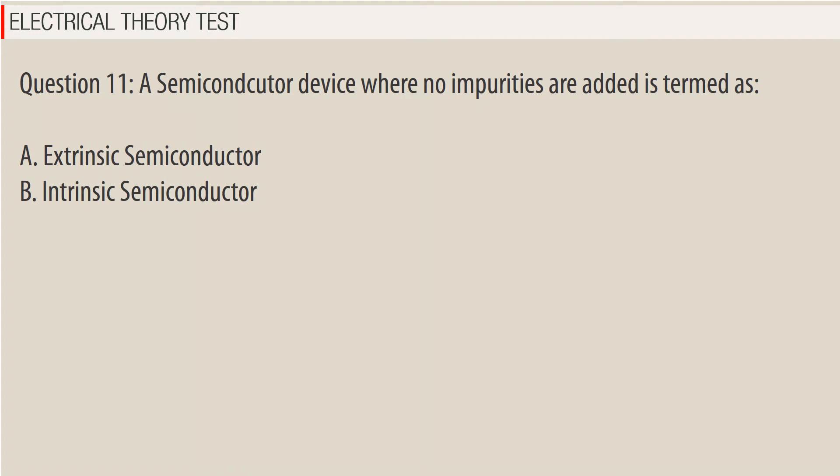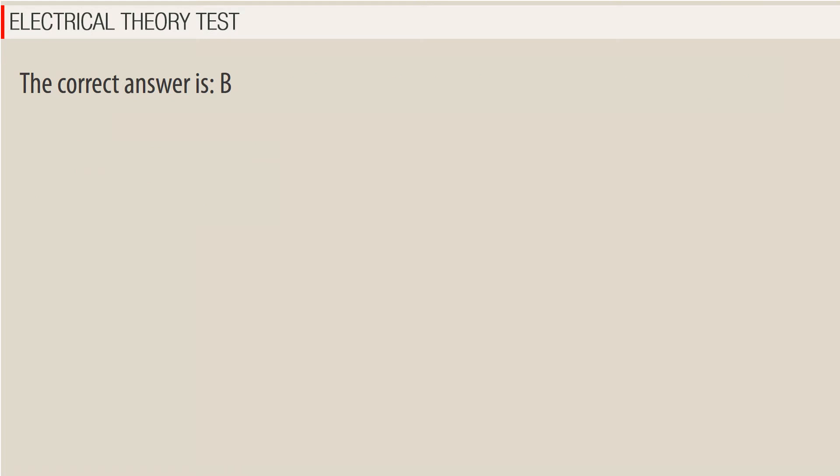Question 11. A semiconductor device where no impurities are added is termed as: A. Extrinsic semiconductor. B. Intrinsic semiconductor. The correct answer is B — Intrinsic semiconductor.